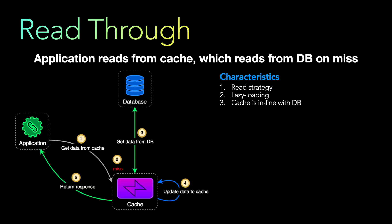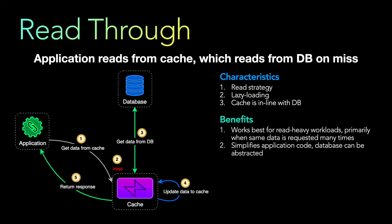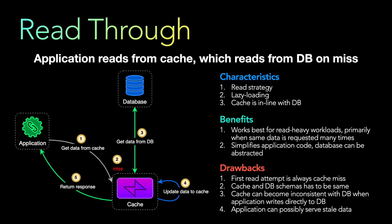Characteristics of read-through: it is a read strategy, a lazy loading strategy, and the cache is in-line with the database. Unlike cache-aside where the cache and database were both connected to the application, here the cache updates the database — so the cache and database schemas have to match. Benefits include that it works for read-heavy workloads, particularly when the same data is requested multiple times, and it simplifies the application code because the database is abstracted.